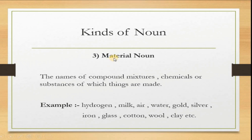The third kind of noun is material noun. The names of the compound mixtures, chemicals or the substances of which things are made. For example: hydrogen, milk, air (which is a combination of gases), water, coal, silver, iron, glass, cotton, wool, clay.